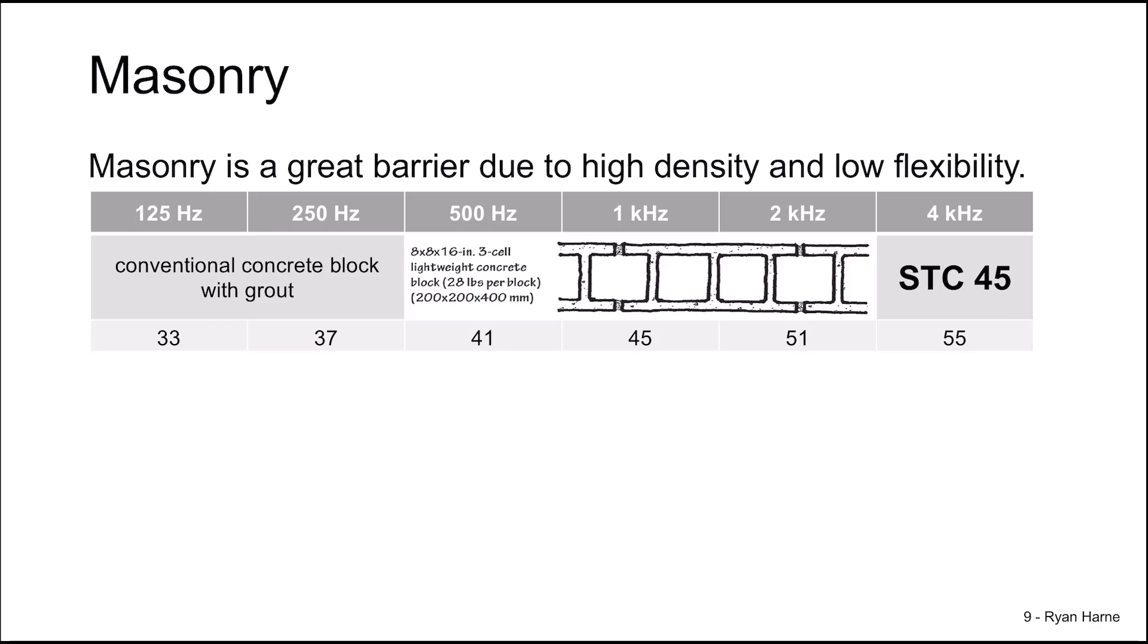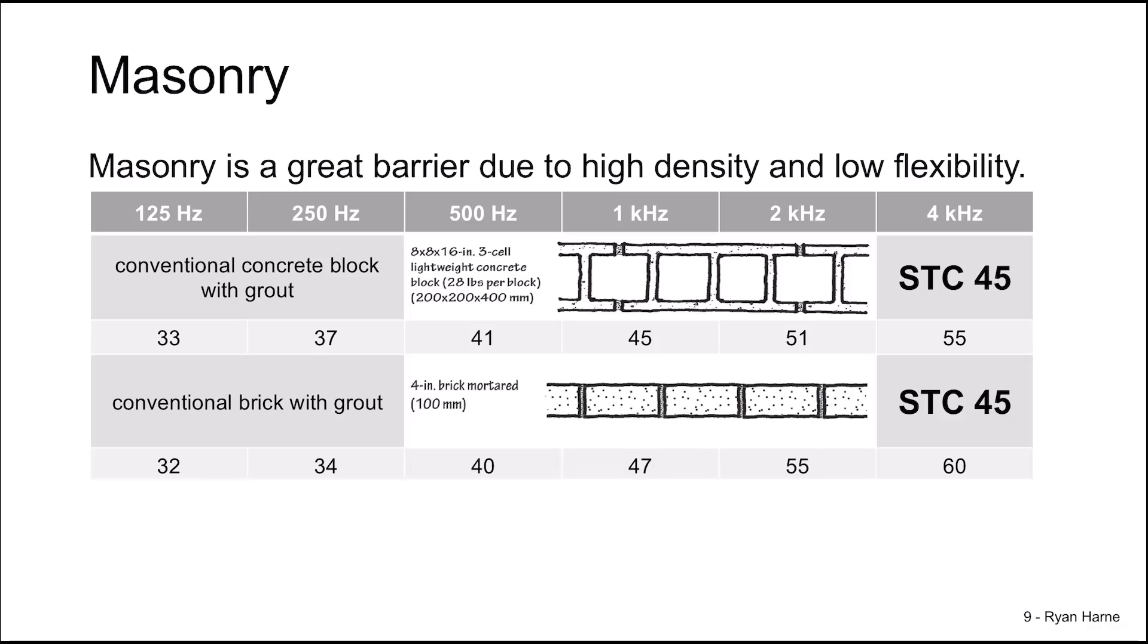Let's also look back at masonry. We saw that concrete itself had a very good transmission loss from 125 hertz to four kilohertz. When we work that out in terms of STC rating in one-third octave bands, we find that it leads to an STC of 45. We then found that a standard single brick wall had slightly less transmission loss at low frequencies and slightly greater transmission loss at high frequencies than that concrete wall.